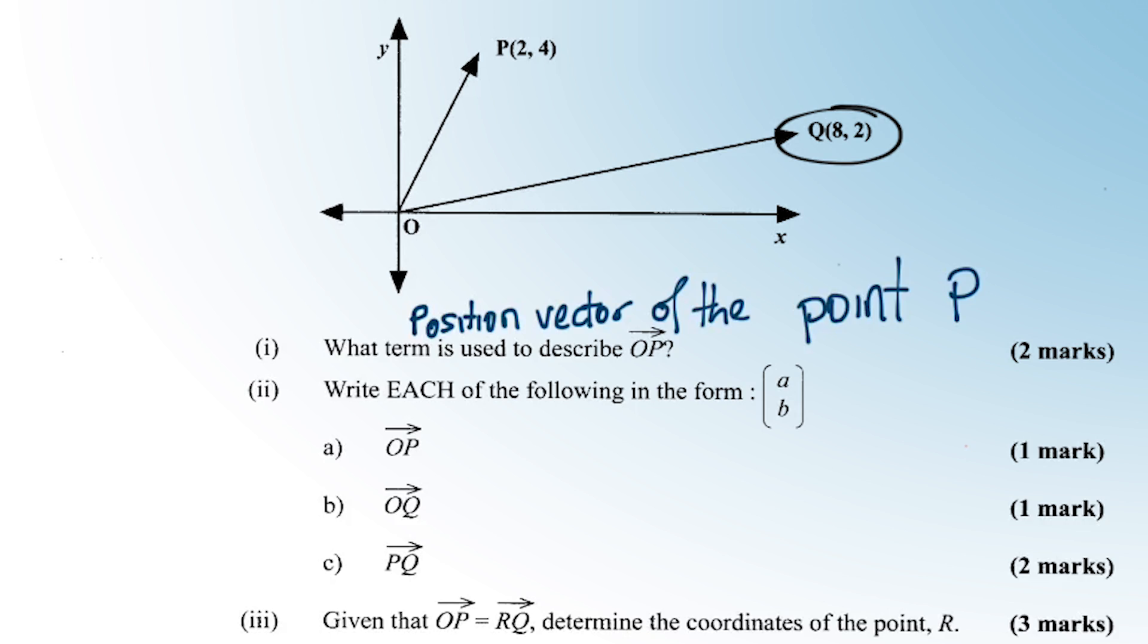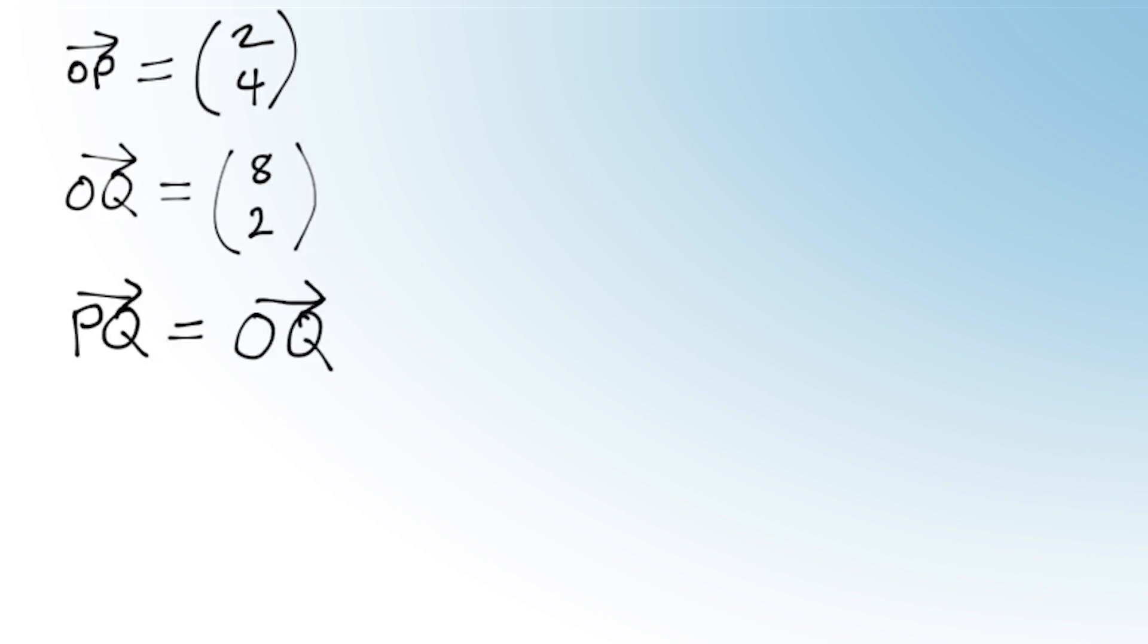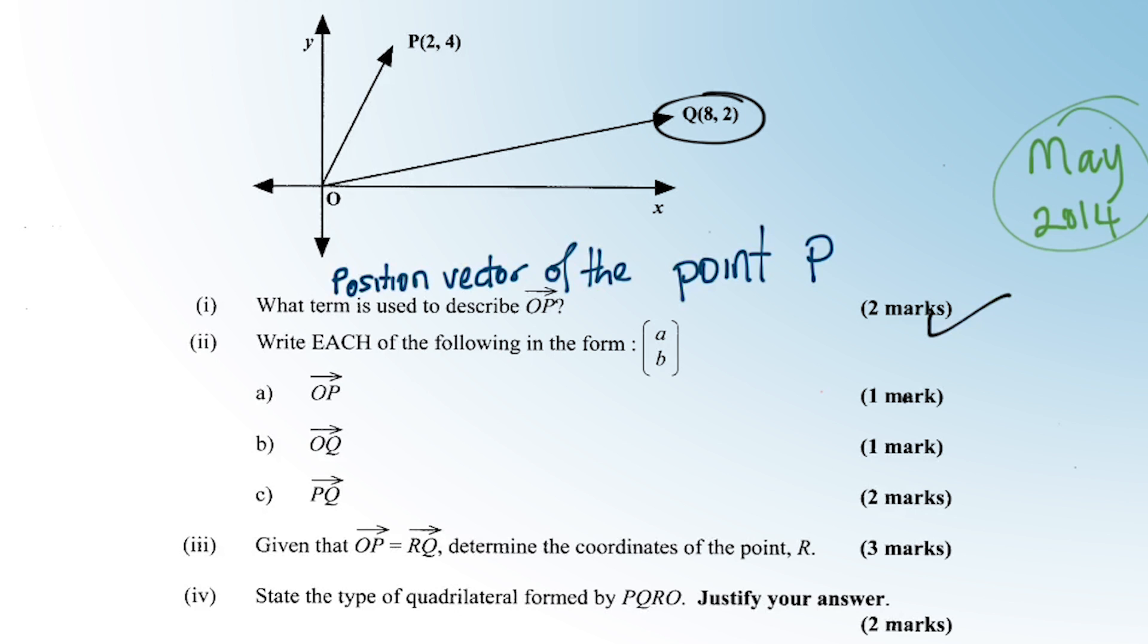Alright, this is going really easy so far. PQ, but this question has another tricky part in it. PQ, alright, so you're going to use the triangle of vectors here, the triangle law. PQ, and remember I told you this law is going to save you all the time. This is very important. OQ take away OP. We already know what OQ is. OQ is (8, 2), take away OP which is (2, 4). We don't even have any negative numbers. This is just going to be (6, -2). So PQ is (6, -2).